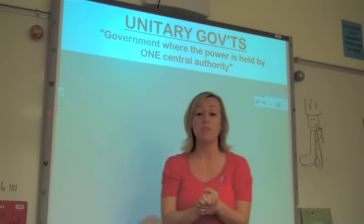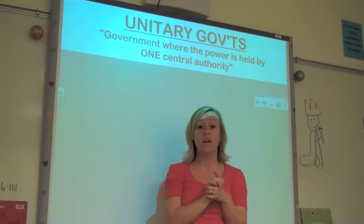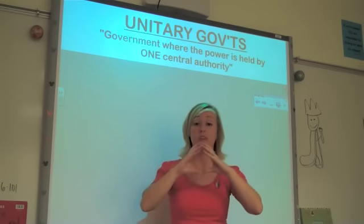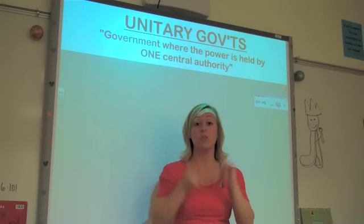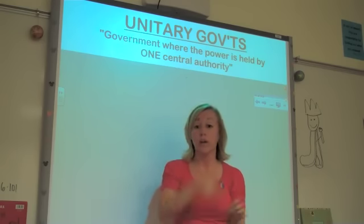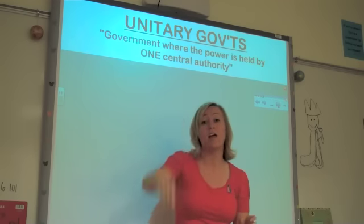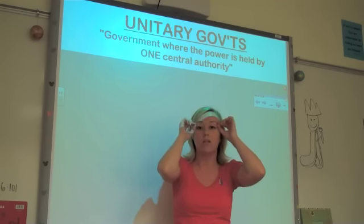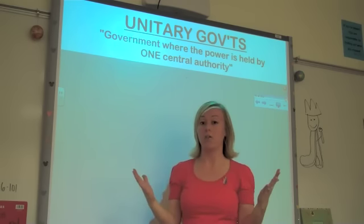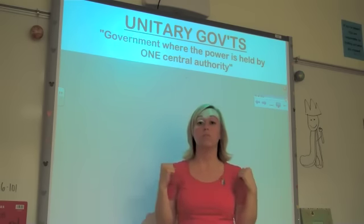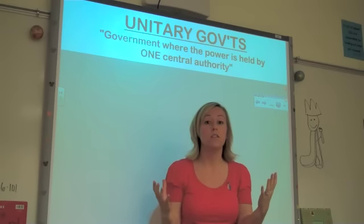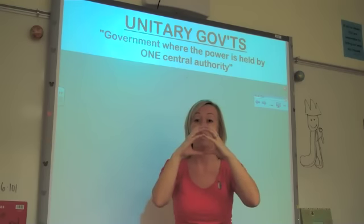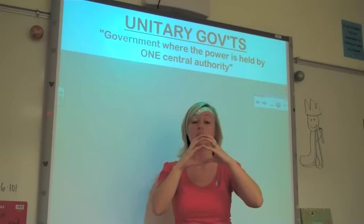The first thing you need to start with is the basic definition: a unitary government is a government where the power is held by one central authority. Think unicycle has one wheel, unicorn has one horn sticking out of their head, unibrow — people have one eyebrow. So when we're talking about unitary governments, you could mean one person, or you could mean one central authority, as in a group that makes all the rules and laws in the country.